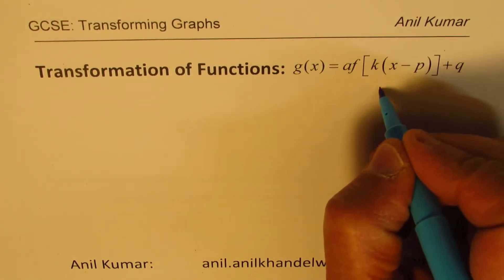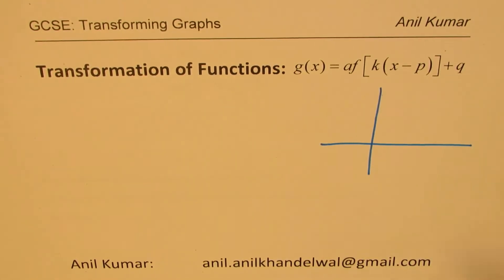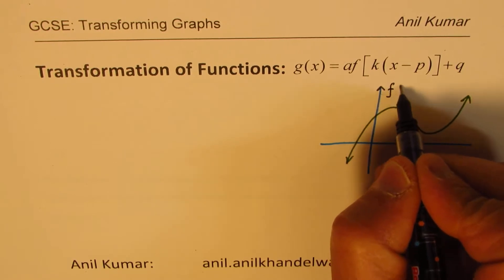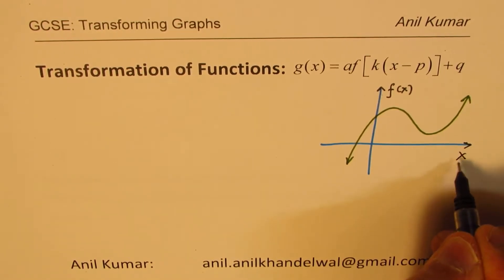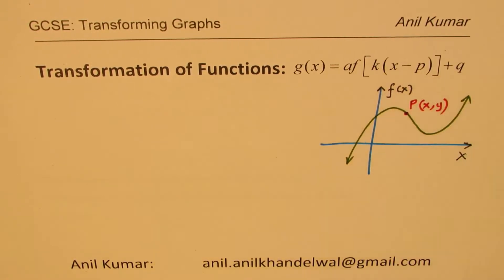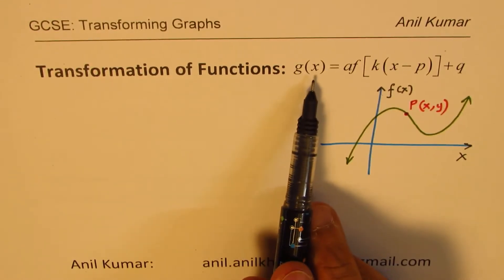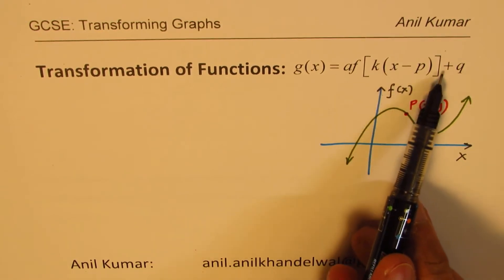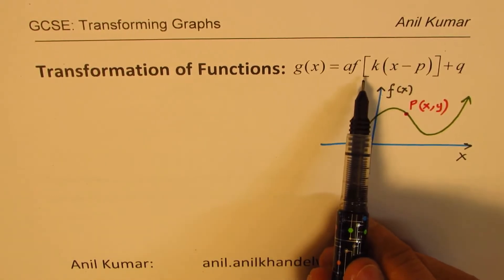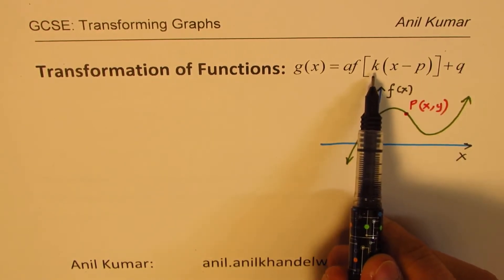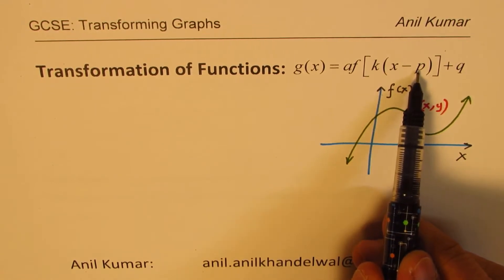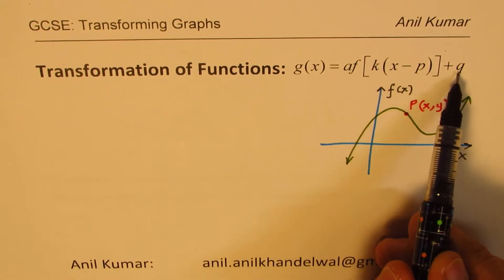Before I begin, let me explain some very basic concepts. We have a graph of a general function f(x) — it seems to be a polynomial — and we consider a point P with coordinates (x, y). The transformation function g(x) could be a·f(kx - p) + q. That is a general formula for transformation of any function. Within the brackets, k is horizontal stretch or compression, and p is horizontal translation left or right. Outside, a is a vertical stretch and q is vertical translation.